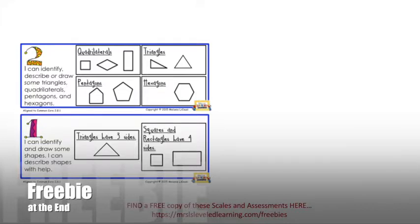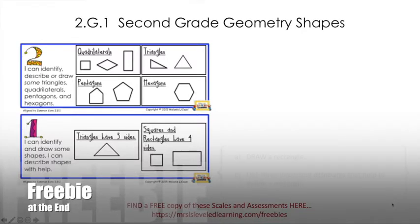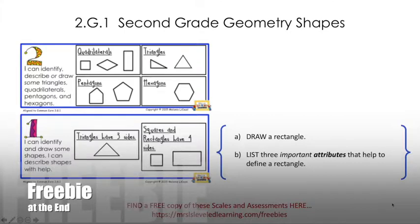In this second grade geometry standard, students are asked to start classifying shapes according to their attributes, putting them in different categories by name and making sure they can identify the important attributes. This is an extension of the first grade standard where they practice doing this. At level one, there are a couple examples on the left: triangles have three sides, squares and rectangles have four sides — those are some of the defining attributes of those categories.